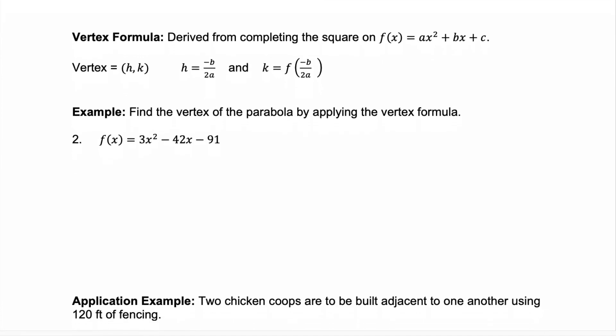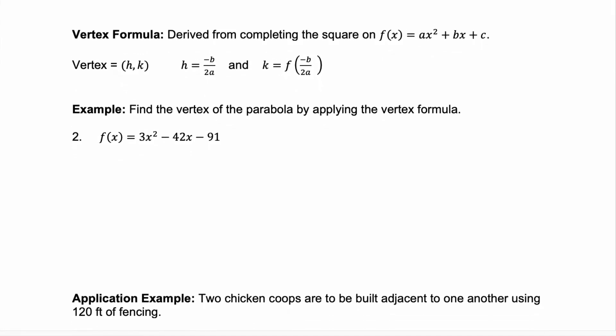Now let's talk about vertex formula. This is derived from completing the square on that standard form of a quadratic. And we know that the vertex, when it's written in vertex form, is the point hk. But if you didn't complete the square, you could still find the vertex by using the h value is equal to negative b over 2a, using the values from the standard form of your quadratic. And then to find your k value, you would substitute that value for h back into your function and get the corresponding value.